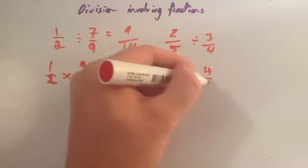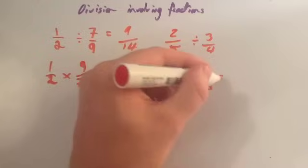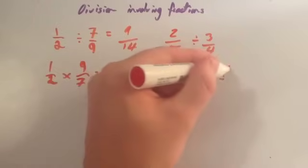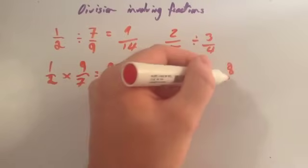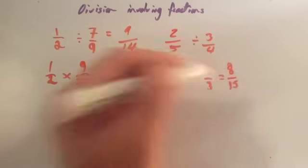Multiply it by 4 thirds. Remember, you just flip one over, take the reciprocal of the second one. 2 times 4 is 8, 5 times 3 is 15. So the answer is 8 fifteenths.